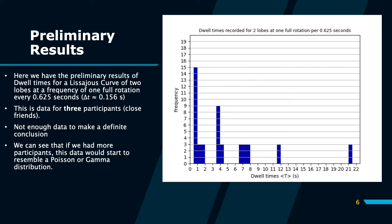While the actual design and implementation of the experiment was the end goal of this EUROS project, me and my supervisors still decided it would be good to get some preliminary data on a select few people to check if our model was working as predicted. What we have here are the dwell times for a Lissajous curve with two lobes at a value of delta t of 0.156 seconds. This experiment was only done on very close friends and family with their express permission — data from three participants for this specific Lissajous curve and frequency. While there's not enough data to make a definite conclusion, we can see that with more participants, the data could be argued to resemble a Poisson or gamma distribution.